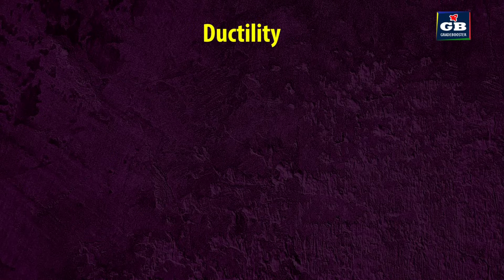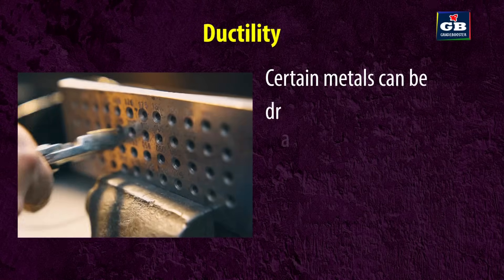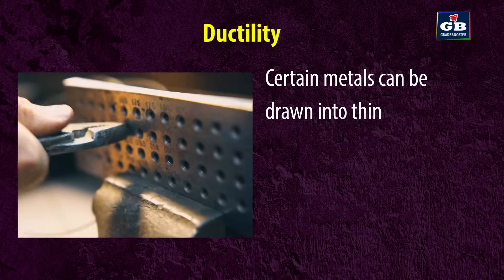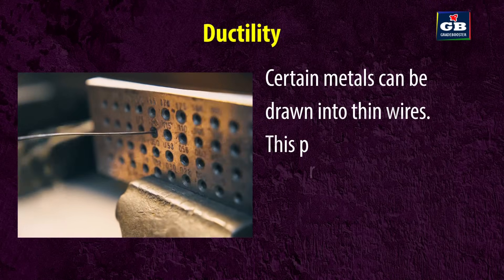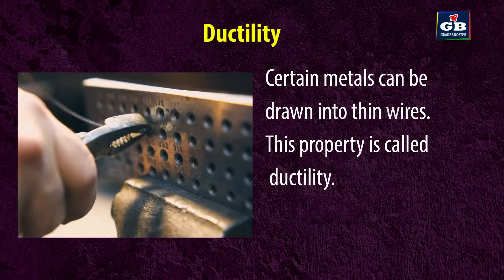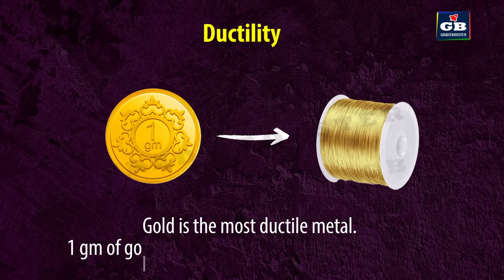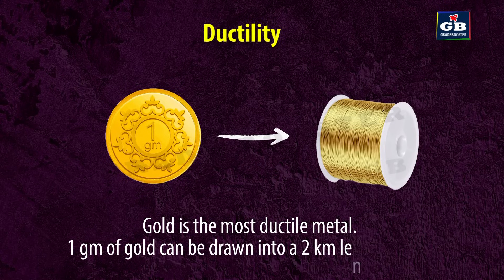Ductility. Certain metals can be drawn into thin wires. This property is called ductility. Gold is the most ductile metal. 1 gram of gold can be drawn into a 2 km lengthy wire.